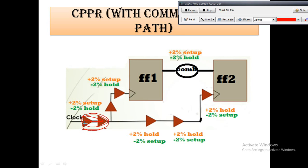If we add a derate value for both the launch path and the capture path for setup, the same effect would be counted twice. So what the EDA tool does is calculate the slack considering the common path to be non-existent, and then adds back double the derate value of the common buffers into the slack. Suppose the derate value is two percent — they will add four percent in the slack value for the common buffers. This is called CPPR — Common Path Pessimism Removal — and this is how we remove the common path pessimism.